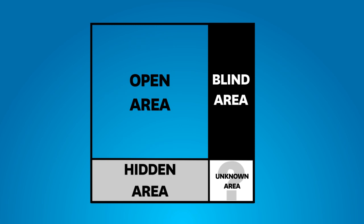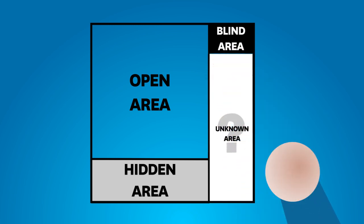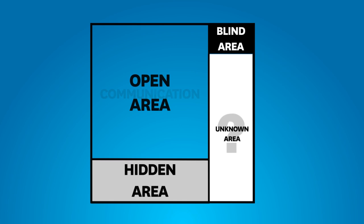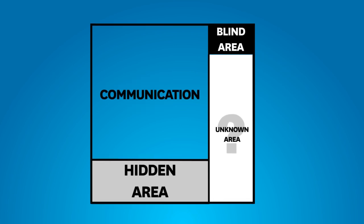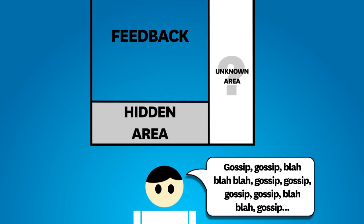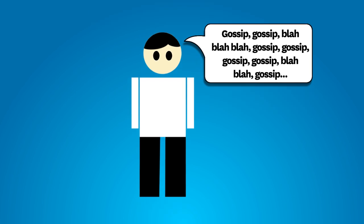The blind area is another area that is not a productive space in a team. The aim should be to reduce this space through increased trust and a willingness to give and receive feedback. This is a great time for you to work on your feedback skills, so you can help out a team member who may need to learn something about themselves.